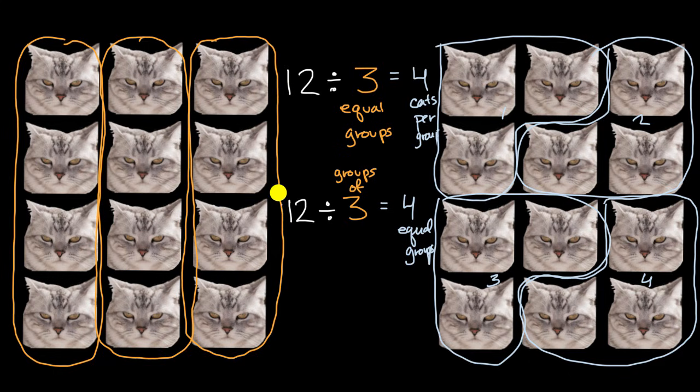So there you have it. There's two different ways that we can imagine division. In the same exact division expression, 12 divided by three, you could view it as 12 being divided into three equal groups, and then the answer would be how many things per group. Or you could say, hey, 12 divided into groups of three, and then that would end up with four equal groups.